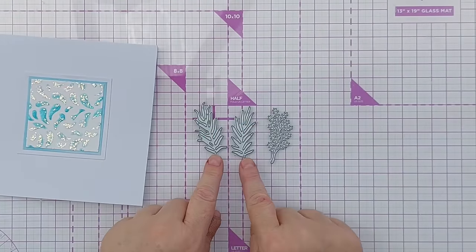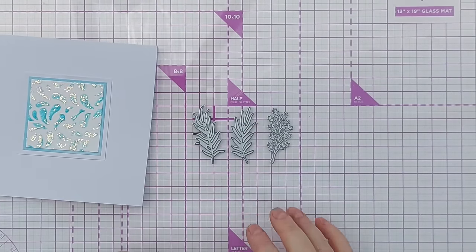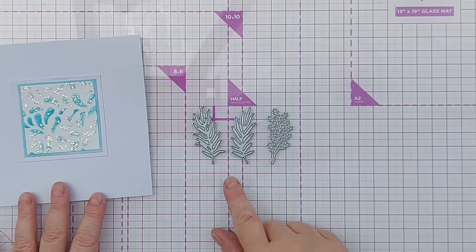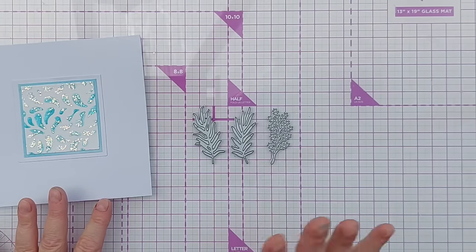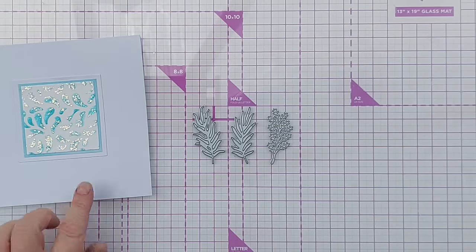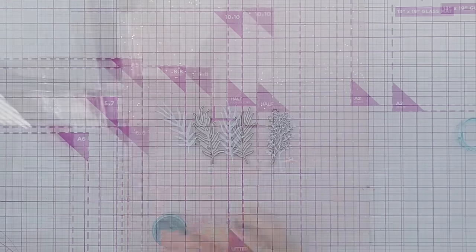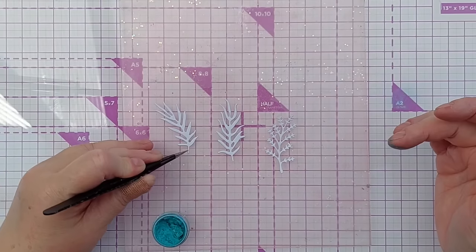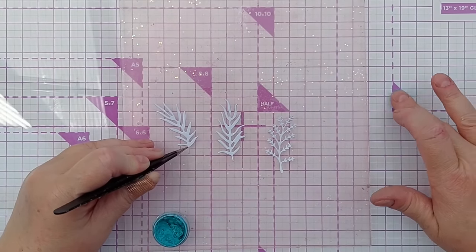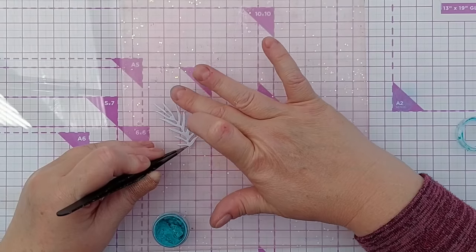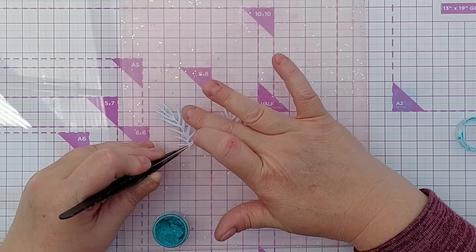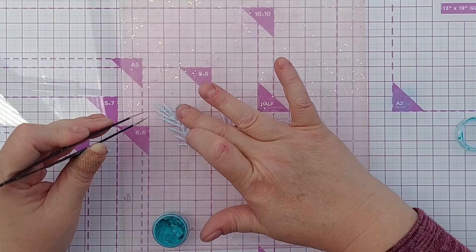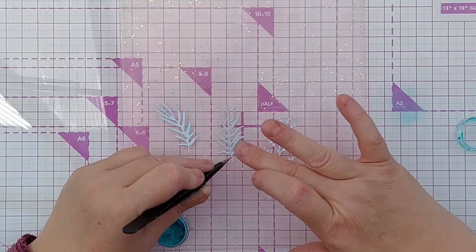I've got some dies here that I think look a bit like seaweed, so I'm going to cut them from smooth white cardstock and then gild them with that gilding wax I used on the square. I'll get a little bit on my finger, blend it off on my glass mat, and then just glance my finger across my seaweed.